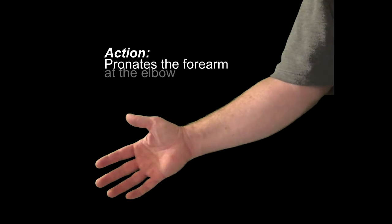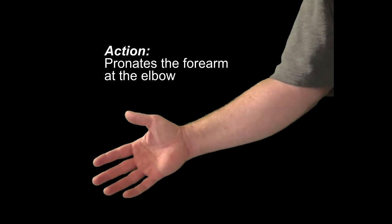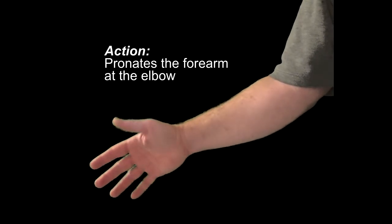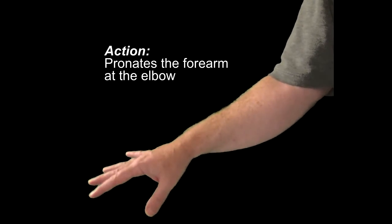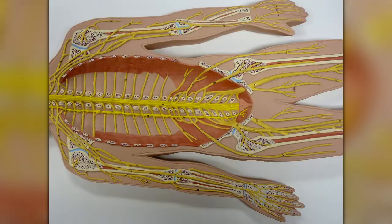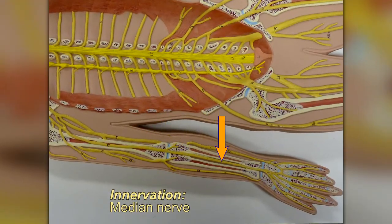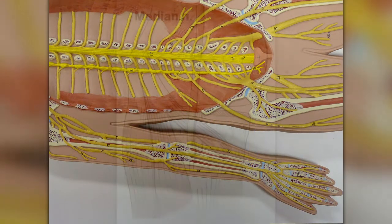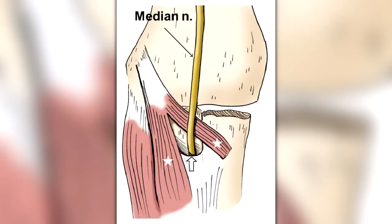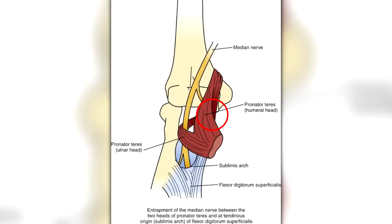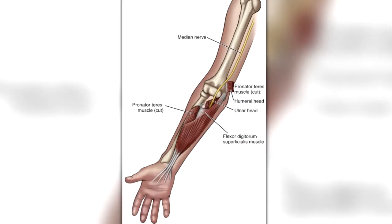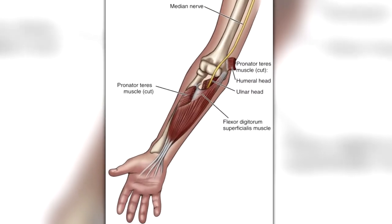Named for what it does, this muscle acts to pronate the forearm. It's innervated by the median nerve. In fact, the median nerve passes between the two heads, running underneath the humeral head to continue down the forearm.